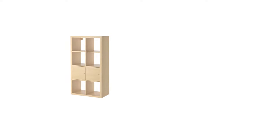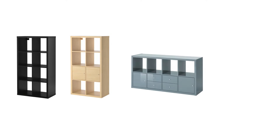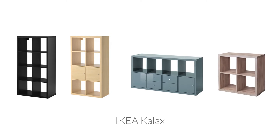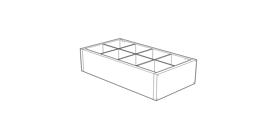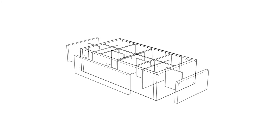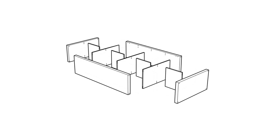Another great example is IKEA furniture. You can see that the modularity of the design is not only in the shape of the bookcase, which allows it to be set in different directions, or that you can add inserts in its openings, but also the very parts that make up the piece itself, which are rectangles of different sizes, repeating the same pattern.